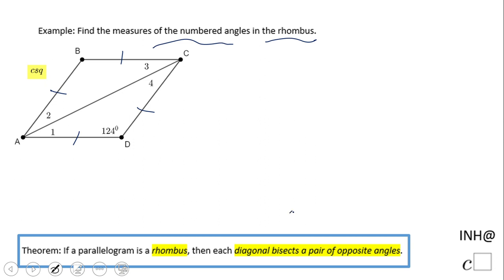about the rhombus: the diagonal bisects the opposite angle. So angle 1 is congruent to angle 2, or the measure of angle 1 equals the measure of angle 2. And also they are congruent to angle 3 and angle 4.